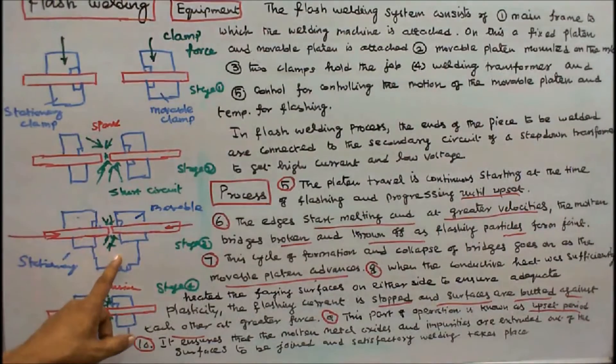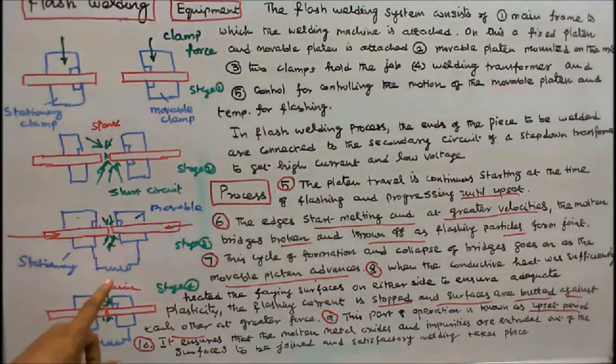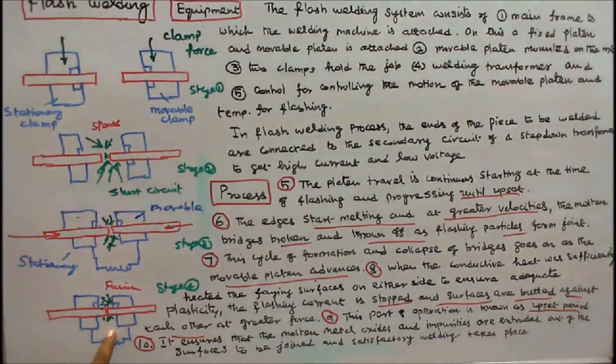5. The edges start melting and at greater velocities the molten bridges are broken and thrown off as flashing particles from joint. The cycle of formation and collapse of bridges goes on as the movable platen advances.